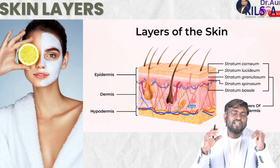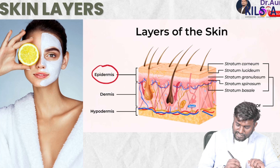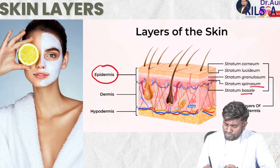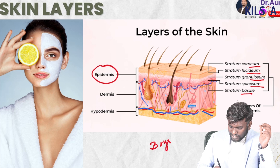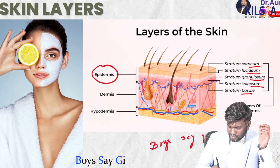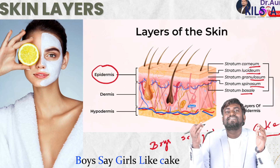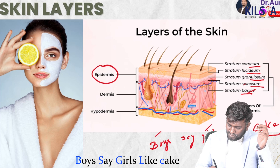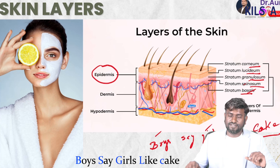Since school days we have all studied about epidermis, dermis, and hypodermis. For the FMG exam it is very important to know the layers of the epidermis: stratum basale, stratum spinosum, stratum granulosum, stratum lucidum, and stratum corneum. The mnemonic is 'Boys Say Girls Like Cake.' Note that the stratum lucidum is absent in the palms and feet.